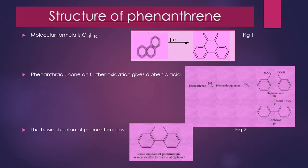Coming to structure determination — the molecular formula of phenanthrene is C14H10, determined from elemental analysis to identify the elements present in the structure. Functional group determination has also been performed, but it does not give any positive functional group test because it does not contain any functional group in the structure.